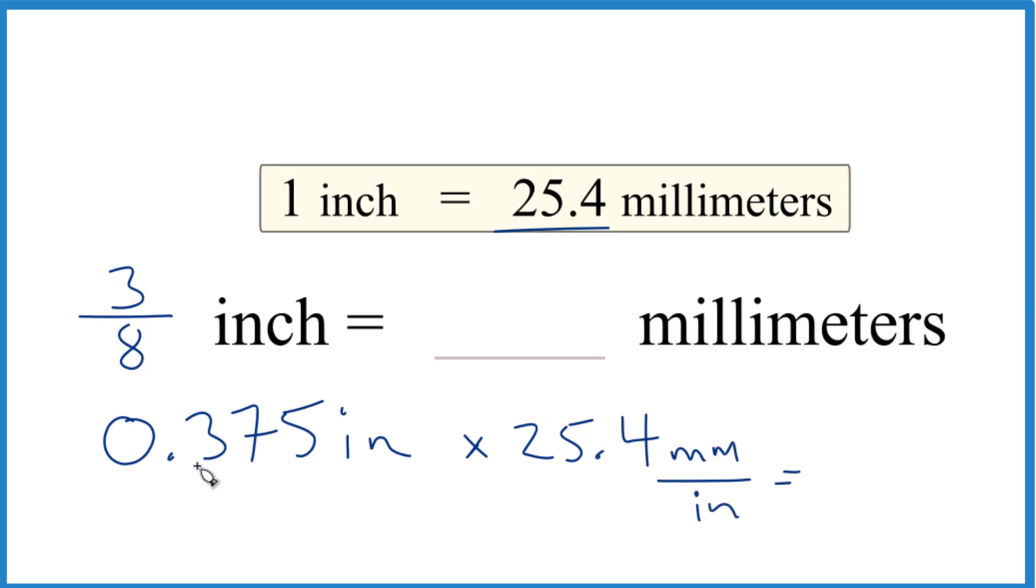When we multiply 0.375 times 25.4, we get 9.53.